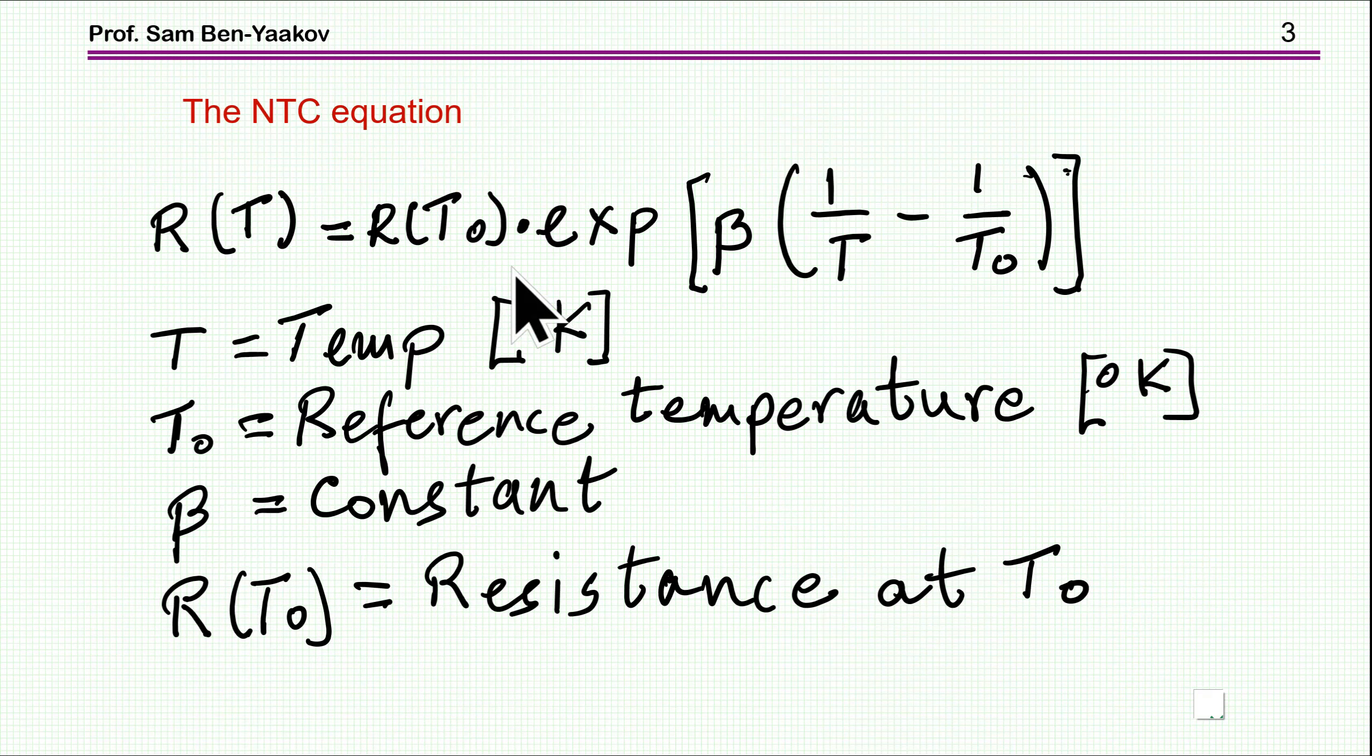There are many ways to describe the behavior of a thermistor by an experimental equation. One of them is this exponential type equation, which I personally like very much. It has been shown that it fits very well in many commercial units. The way it goes is the resistance at a given temperature is equal to the resistance at a reference temperature, and then e to the power of beta. Beta is a constant, it's about 4,000, 3,000, that's the range. And here we have 1 over T, which is the temperature that we are looking for, and the reference temperature. It's important to note that all these temperatures are in Kelvin. So you have to add something like 273 degrees if you are working in degrees Celsius.